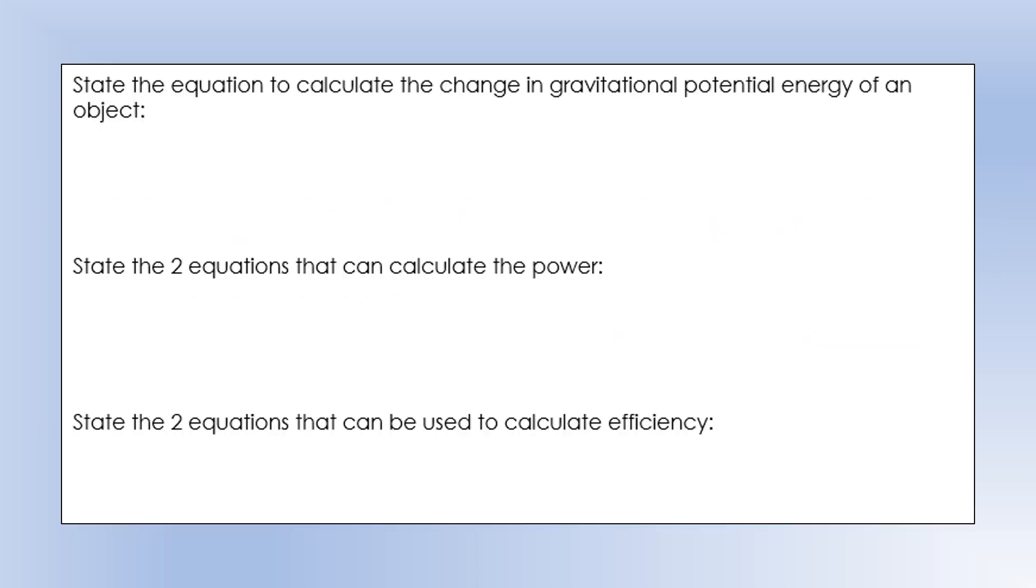State the equation to calculate change in gravitational potential energy of an object. This is a specific case of doing work, where we're doing work to increase the height of an object. The change in the gravitational potential energy is equal to the mass times the gravitational field strength times the change in height. Or, you could say that as it's the weight force times the distance moved parallel to the weight force.